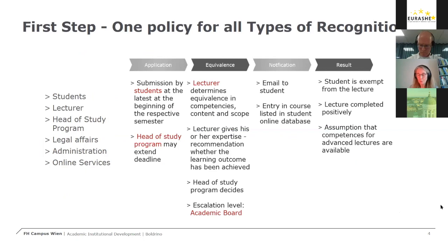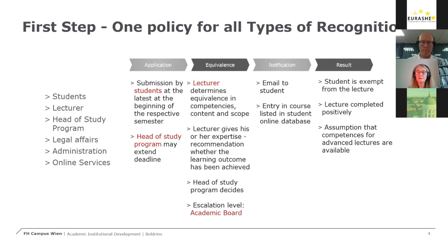Let me now describe how we at FH Campus Wien started to build up our system of RPL. The first step was to set up a policy for all types of recognition for the entire university across the seven departments. The policy includes recognition of formal, non-formal, and informal learning, though in recent years the focus has been on recognition of formal learning. The roles are clearly defined: students are responsible for bringing corresponding documents, heads of study programs make the decisions, lecturers recommend acceptance or rejection, and the academic board handles escalations.